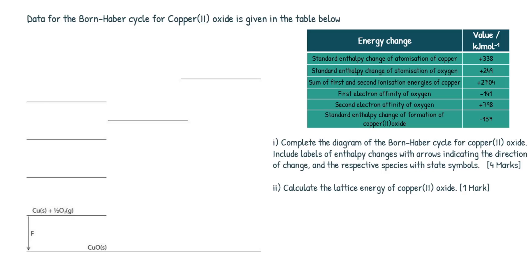In this video, I'm going to teach you step by step how to complete one of these Born-Haber cycle questions. This one specifically is for Copper 2 Oxide, but it doesn't really matter. I'm going to teach you some of the things you need to be aware of and how to do these diagrams. This is not unique to AQA — it's more of a maths-based question. All these Born-Haber cycles, they don't change. Whether you're AQA, OCR, EdExcel, whatever, it's going to be basically the same throughout A-level chemistry.